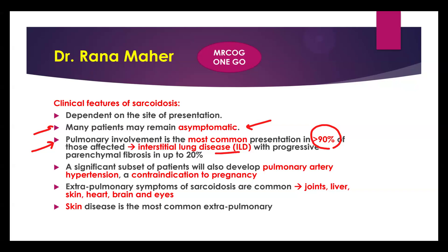Patients with interstitial lung disease usually suffer from lung fibrosis or parenchymal fibrosis. As a consequence, pulmonary artery hypertension may develop, which is contraindicated during pregnancy. It's wise in the preconceptional clinic to offer echocardiogram, ECG, and MRI to rule out pulmonary hypertension and assess fitness for pregnancy.